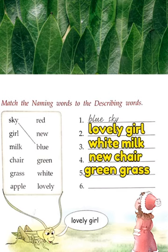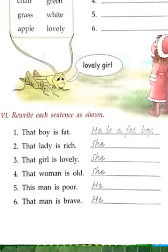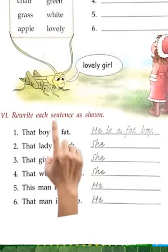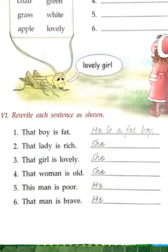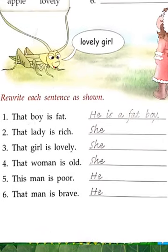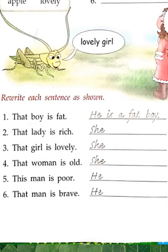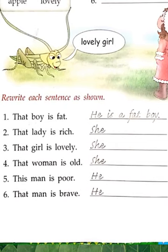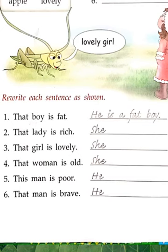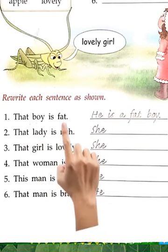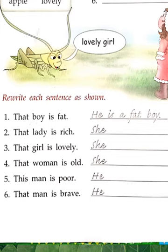Ab neeche dekhiye Question number 6: 'Rewrite each sentence.' Page number 39 mein jo sentence diya gaya hai left hand side mein, use phir se sentence ki tarah likhna hai. For example number one: 'He is a fat boy' — woh ek mota ladka hai.